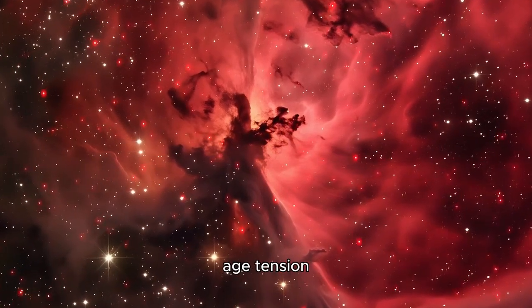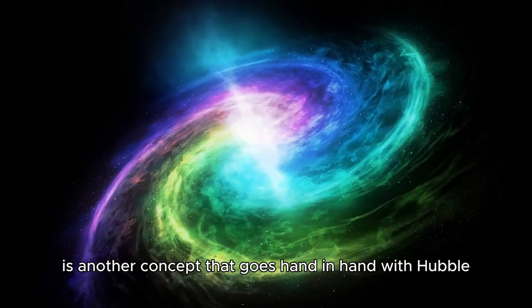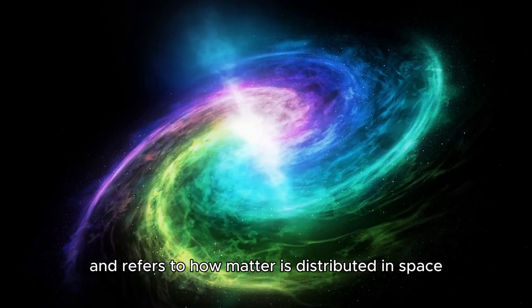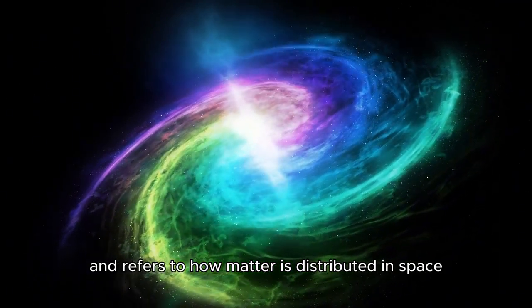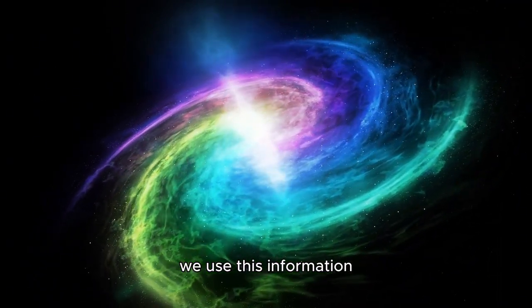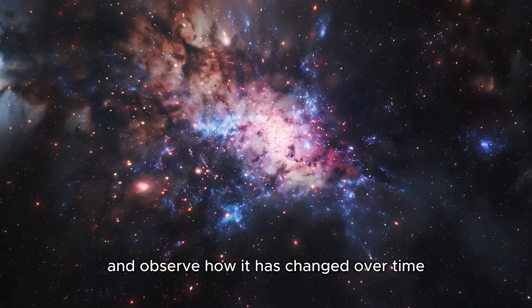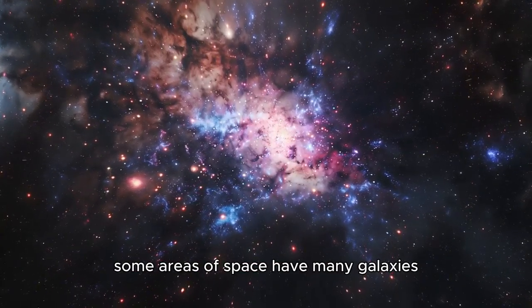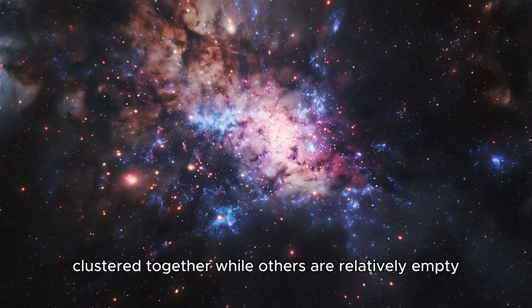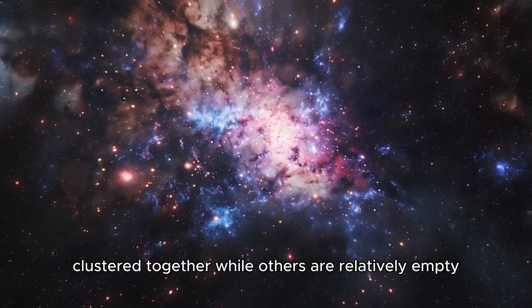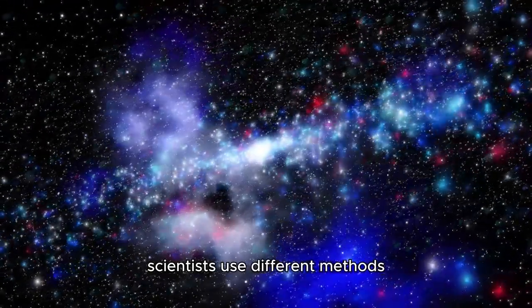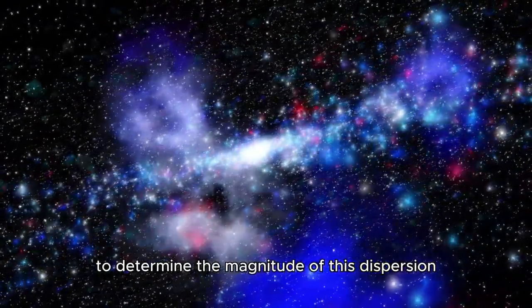Structure age tension is another concept that goes hand in hand with Hubble tension and refers to how matter is distributed in space. We use this information to model the structure of the universe and observe how it has changed over time. Some areas of space have many galaxies clustered together, while others are relatively empty.